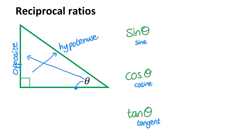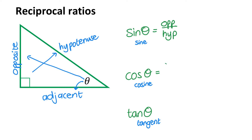And the side that is left over, or the side that is next to the angle — not the hypotenuse, the other side — that's called the adjacent side. So the sine of an angle is opposite over hypotenuse, the cosine of the angle is adjacent over hypotenuse, and the tangent of an angle is opposite over adjacent.